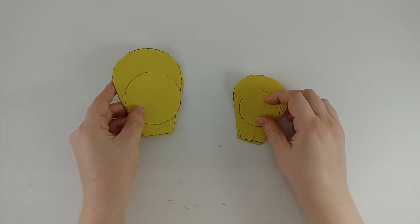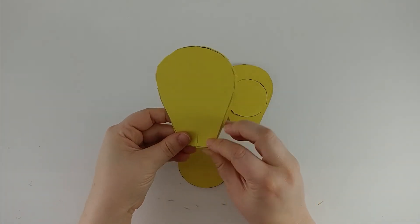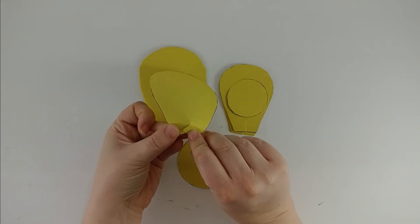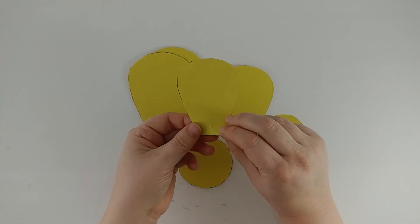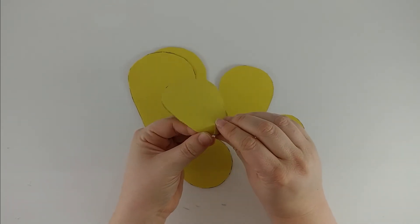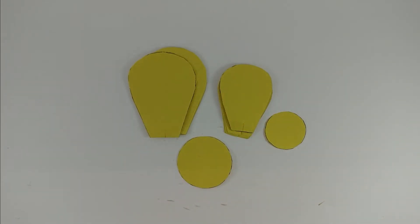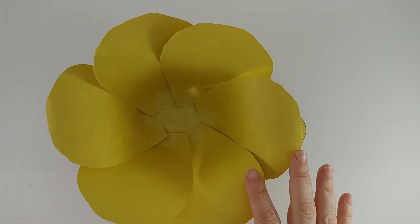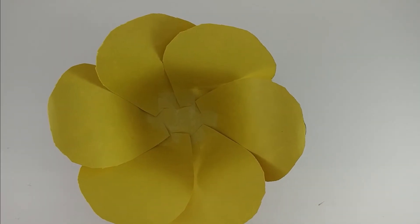We're going to do the same with our medium petals and our small petals, but we are going to cross the feet of our medium petals a little bit more than we did with our large petals. And we're going to cross the feet of our small petals the most out of all of the petals. If you look at the petal standing on a flat edge, the big petals will want to lay down more and the smaller the group will want to stand up more.